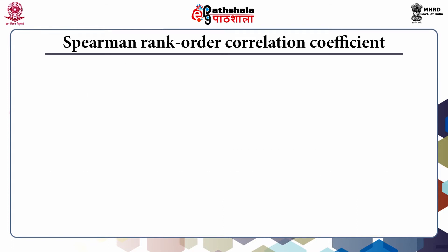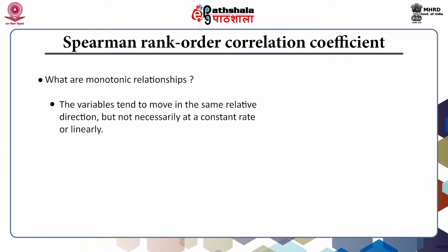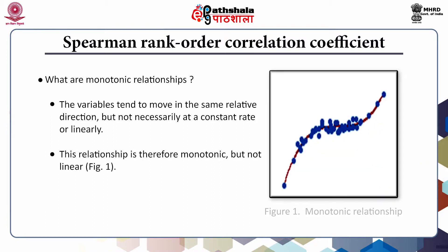To understand Spearman's rank order correlation coefficient, we should first understand monotonic relationships. Here, variables tend to move in the same relative direction but not necessarily at a constant rate or linearly. This relationship is therefore monotonic but not linear, as shown in the figure alongside. Linear relationships are also monotonic.